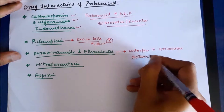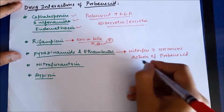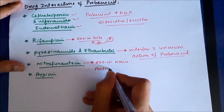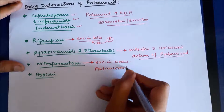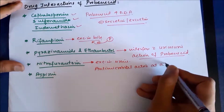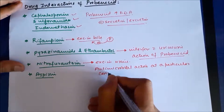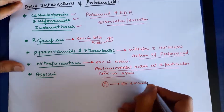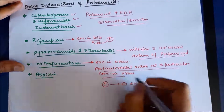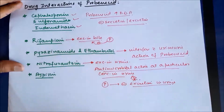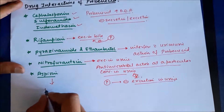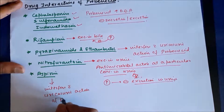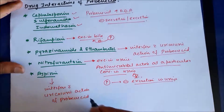Pyrazinamide and ethambutol can interfere with the uricosuric action of probenecid, so they should not be used together. Nitrofurantoin, which is excreted in urine and has antimicrobial action when it achieves a particular concentration, has its excretion inhibited by probenecid, preventing it from reaching the required antimicrobial concentration. Aspirin itself interferes with and decreases the uricosuric action of probenecid.